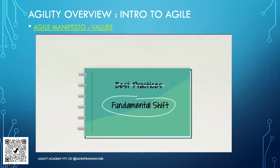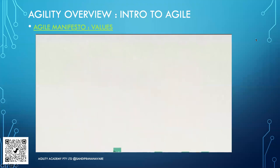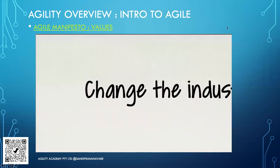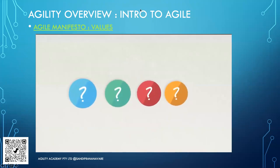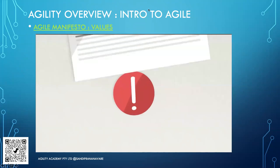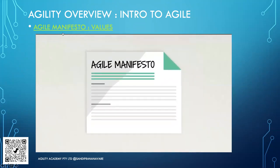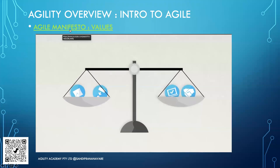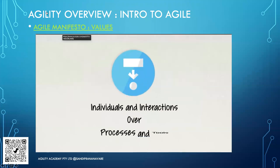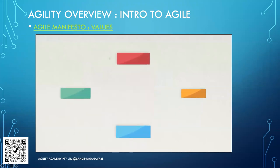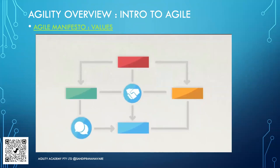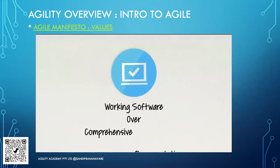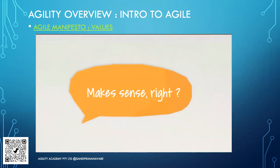The Agile Manifesto was the declaration of four bold value statements that became the basis of a new approach to software development, changing the industry forever. Importantly, the manifesto notes that all things mentioned are important — it's just that some must be prioritized over others. Value one: individuals and interactions over processes and tools. This doesn't mean throwing processes out the window; a good face-to-face chat should trump rigid workflows and impersonal communication.